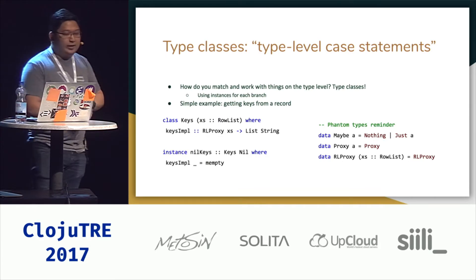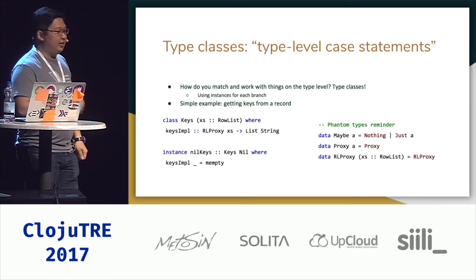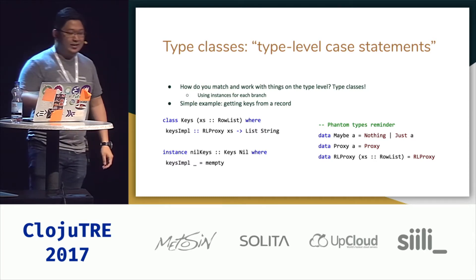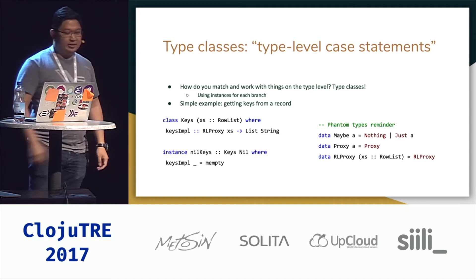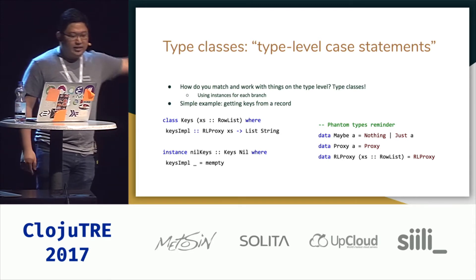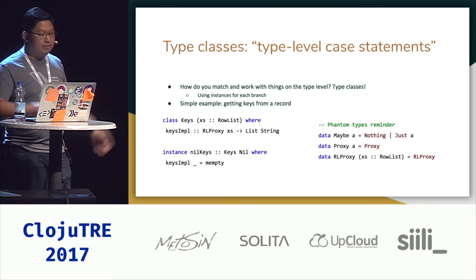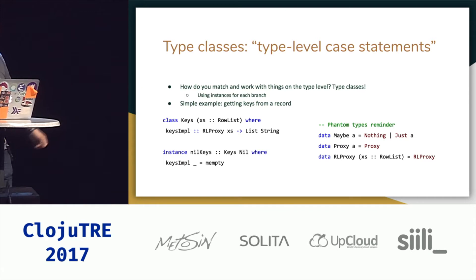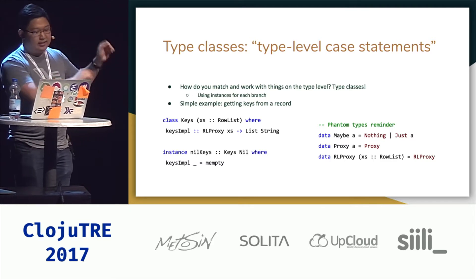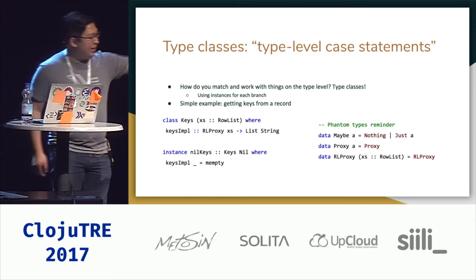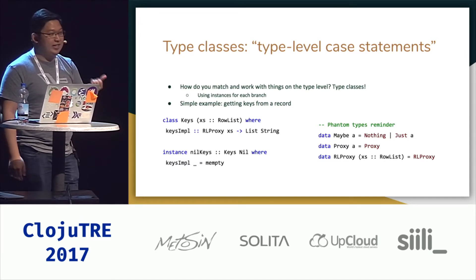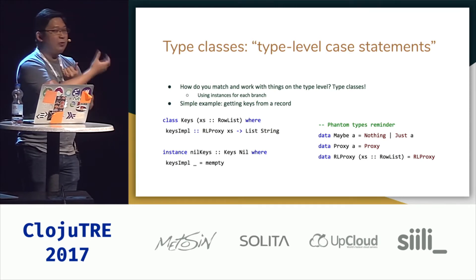The way you actually match on a row list for instances is that you use type classes to say what parameters you want, and you use the instances to say how you want to match them. For a simple example, the Keys type class takes one parameter of RowList, and has one method — keys implementation — which takes a RowList proxy and returns a List String. A phantom type is just a parameterized data type where the constructors don't have that type — it exists only at the type level, carried around as a witness.